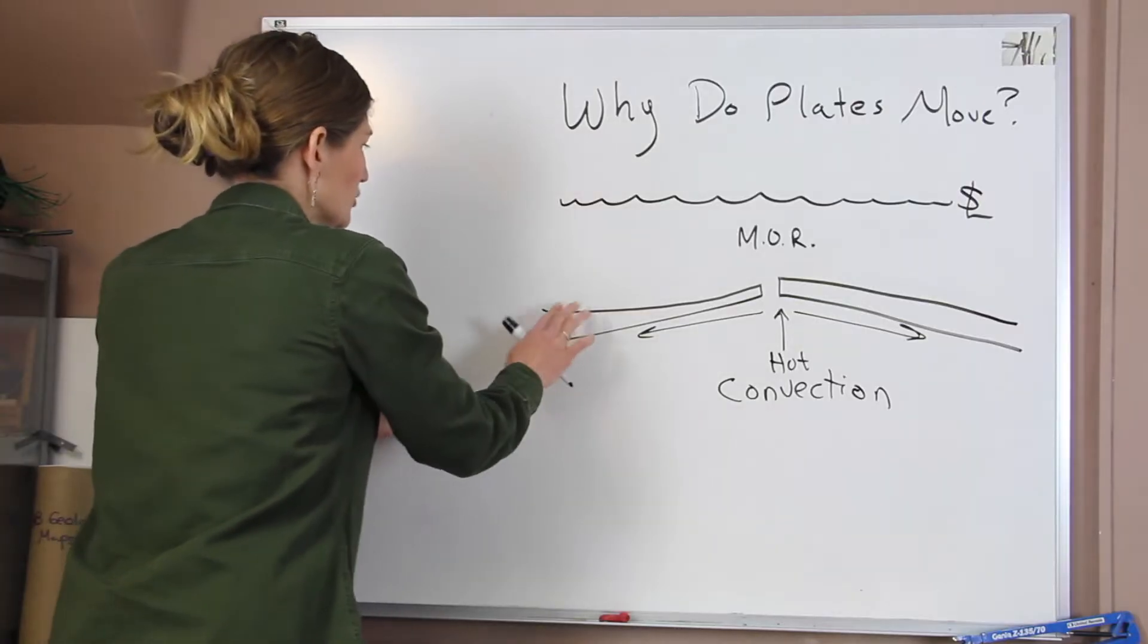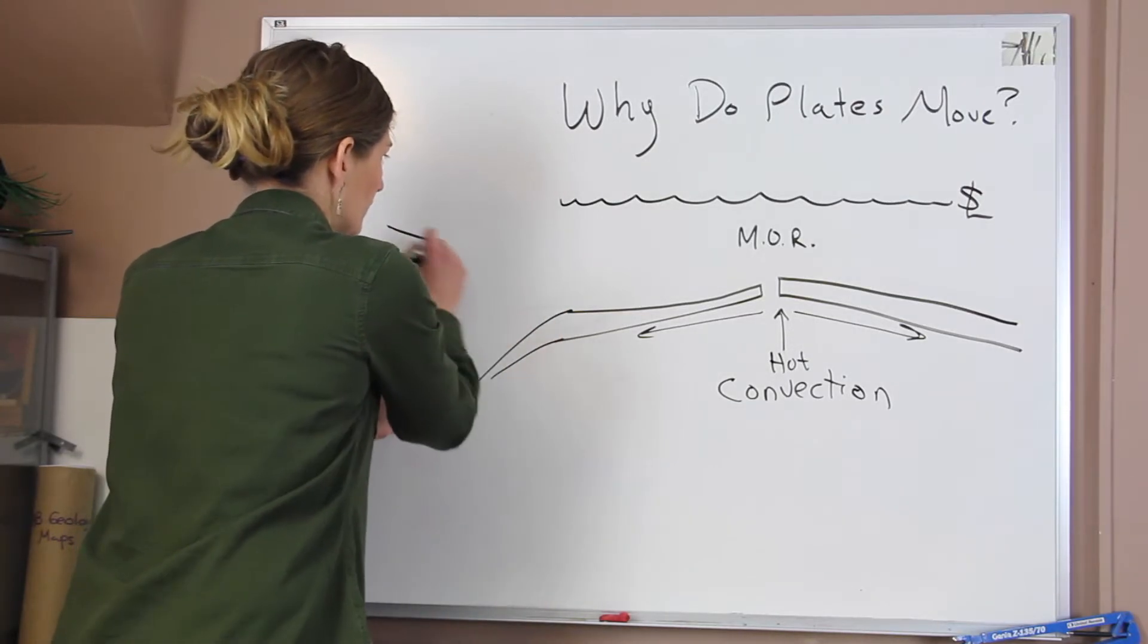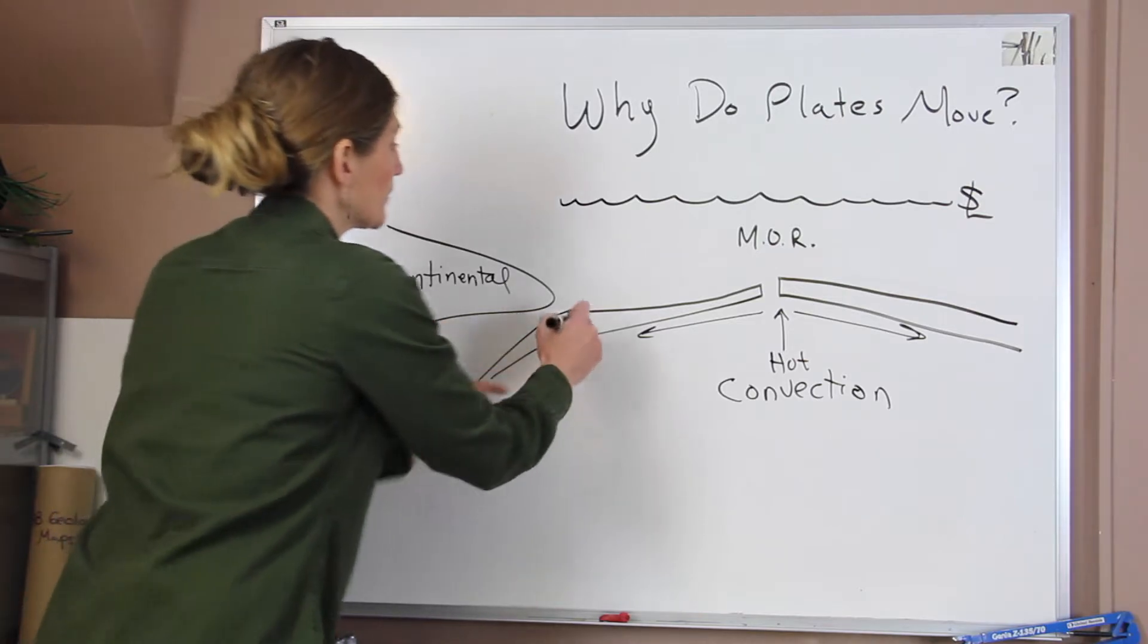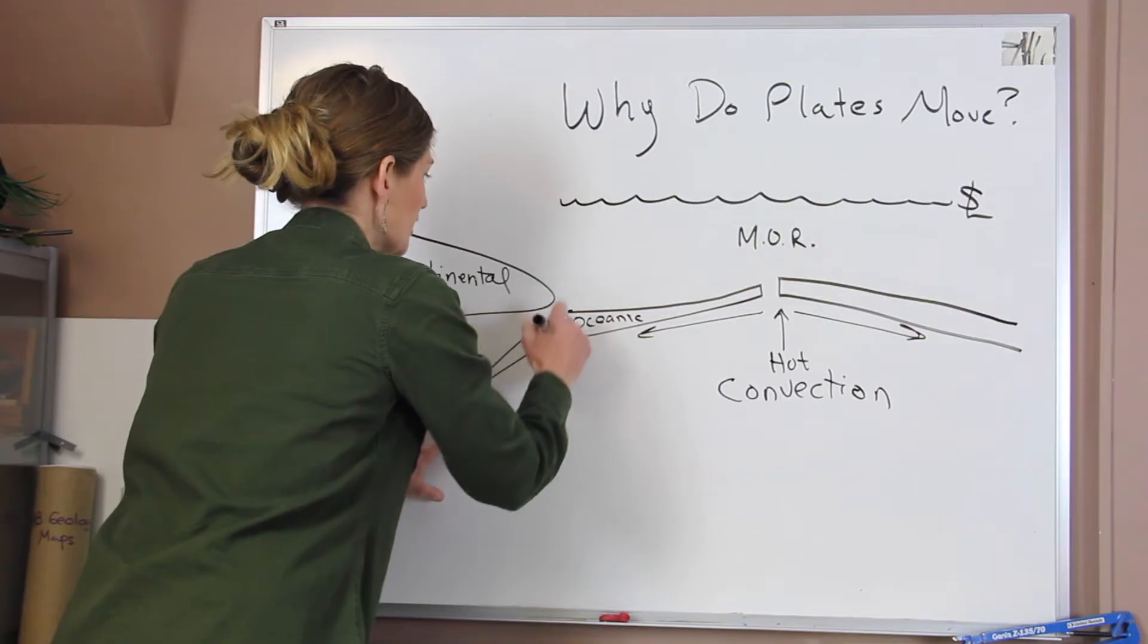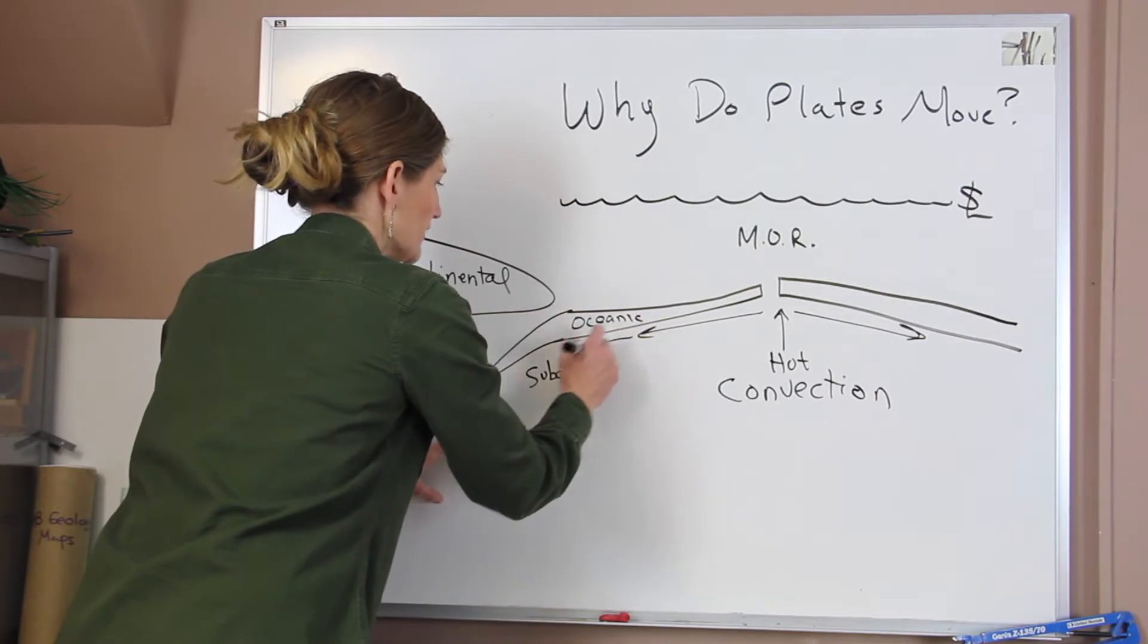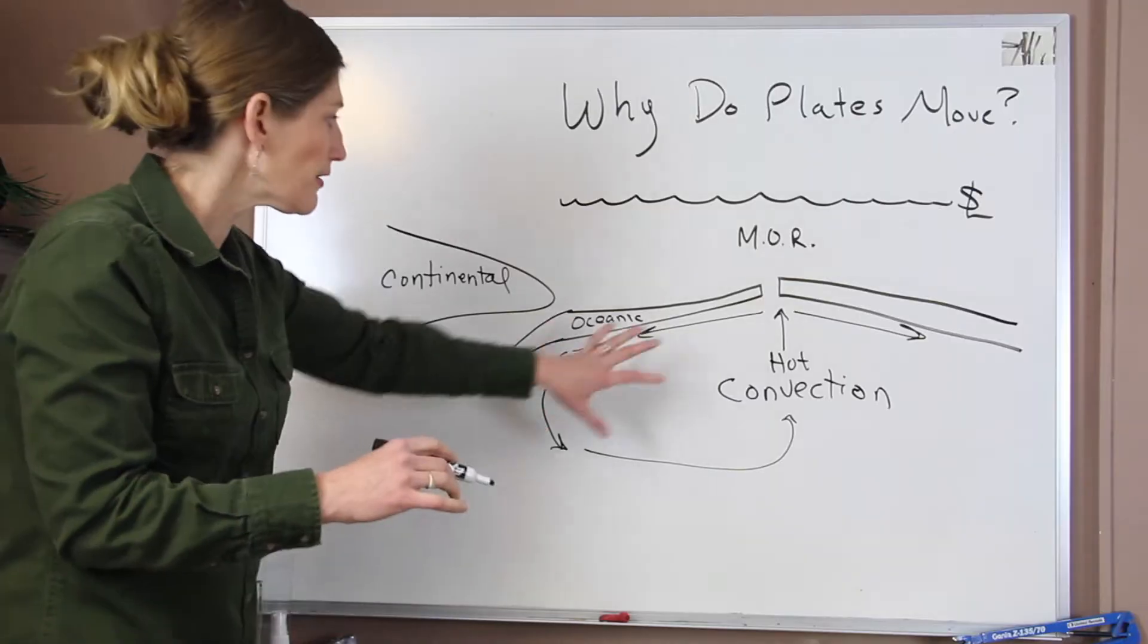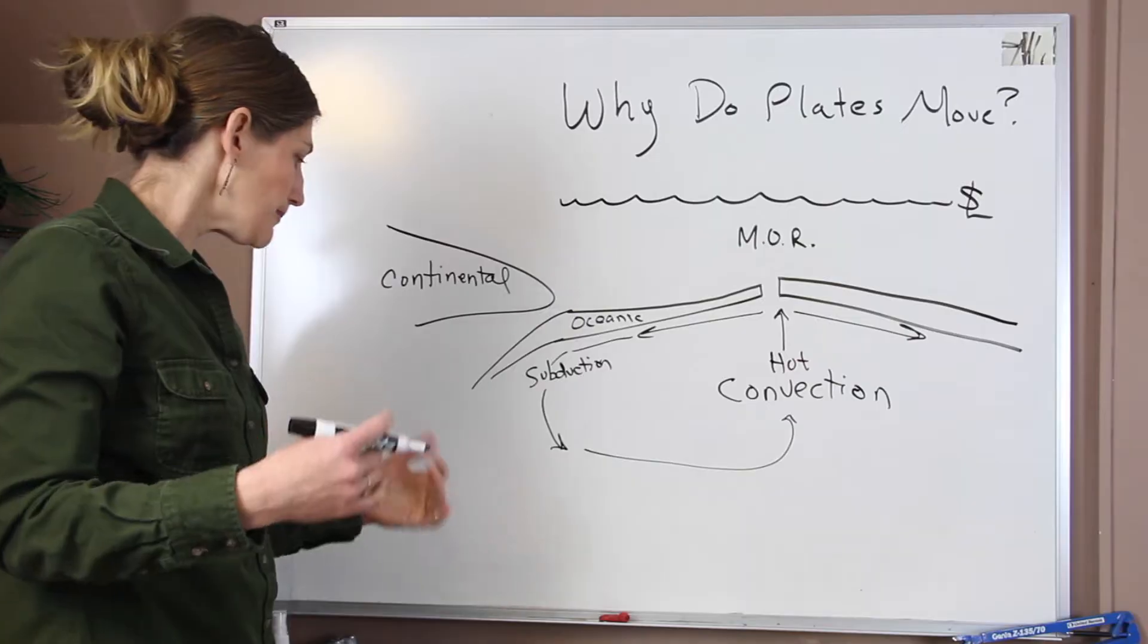Eventually, a plate would get into a subduction zone, and it would collide with another plate. So we have some continental lithosphere, our oceanic lithosphere, and we would get subduction, and then this mantle material would be just coming down, and then it would eventually circulate back. So we'd get these big convection currents within our mantle, and that was proposed for the driver of plate motion.